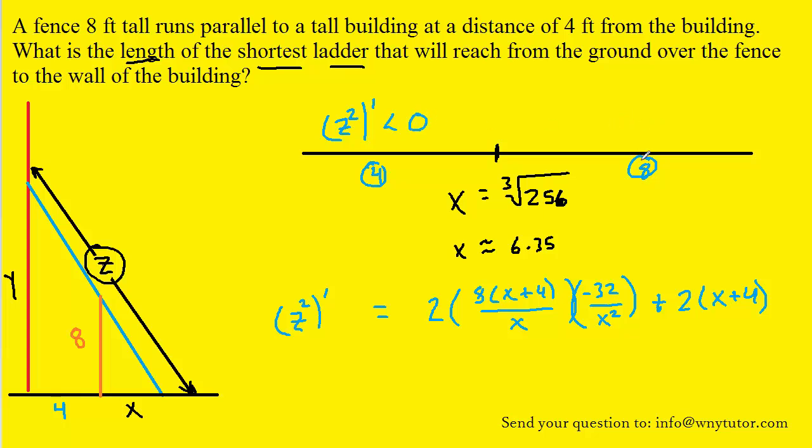And when we do that, we see that the derivative when plugging 4 in is negative. It's less than 0. When we plug 8 into the derivative, we see that the derivative is greater than 0. So when the derivative is less than 0, that means the function is decreasing. When it's greater than 0, the function is increasing. Therefore, we can see right here at x equals the cube root of 256, we do have indeed a minimum value for z squared.